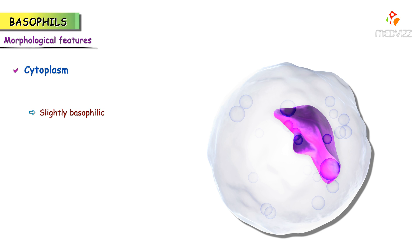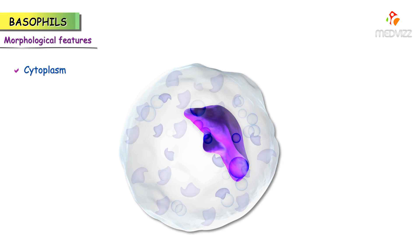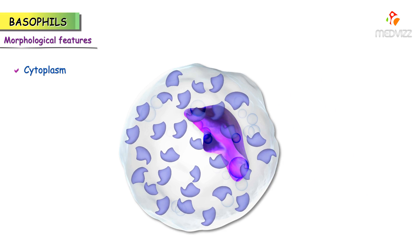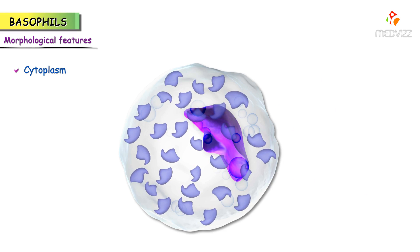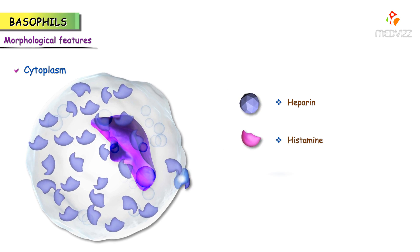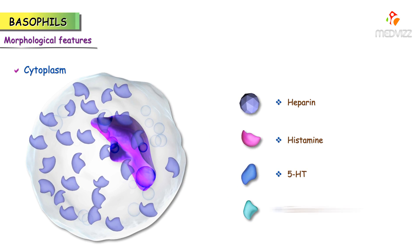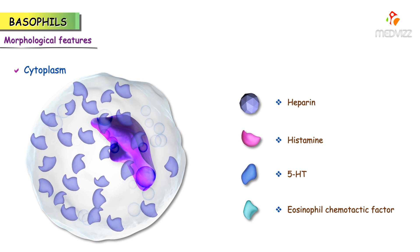The cytoplasm of the basophil is slightly basophilic and appears blue, and it is full of granules. The granules of the basophil stain deep purple or blue with a basic methylene dye. Granules are in plenty and completely fill the cell as well as overload the nucleus. The granules of basophils contain heparin, histamine, and 5-hydroxytryptamine, and also contain eosinophilic chemotactic factor A.